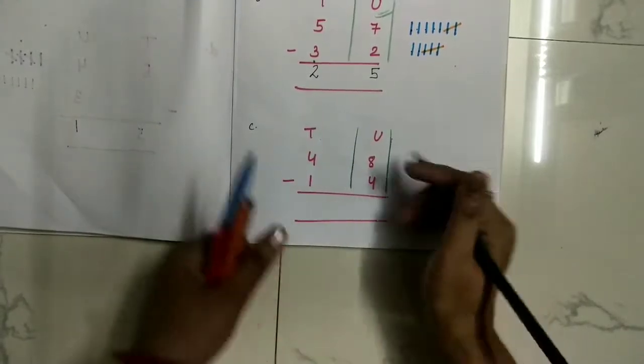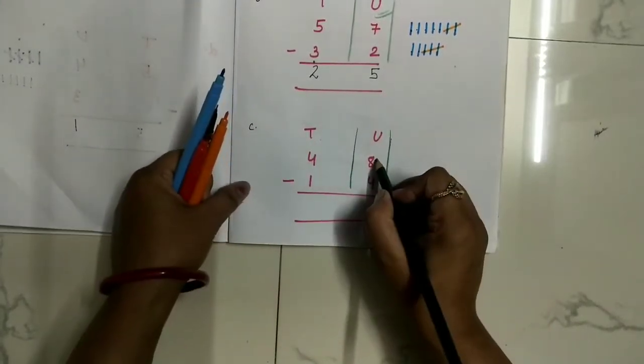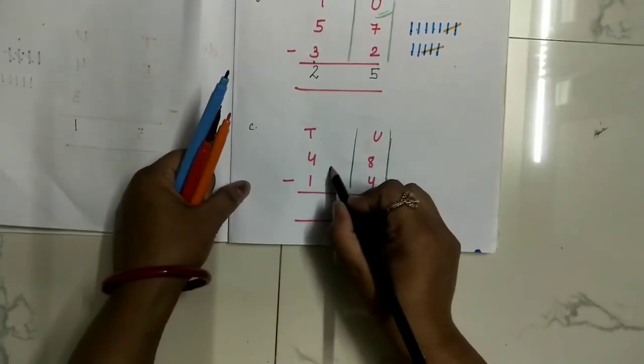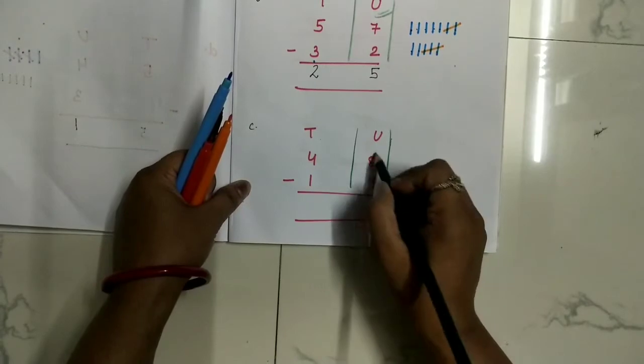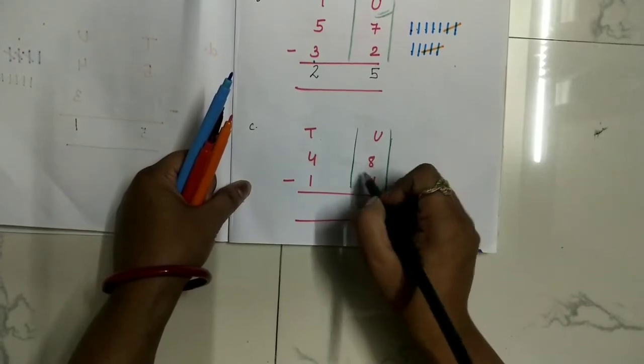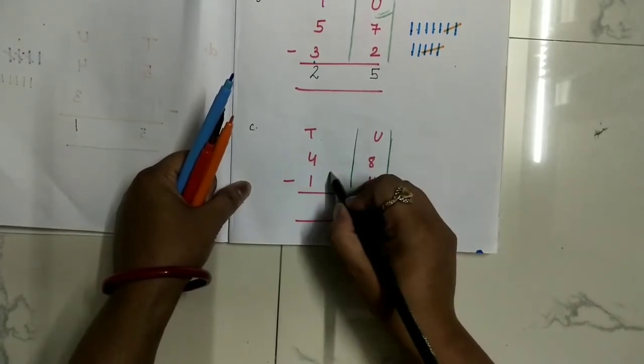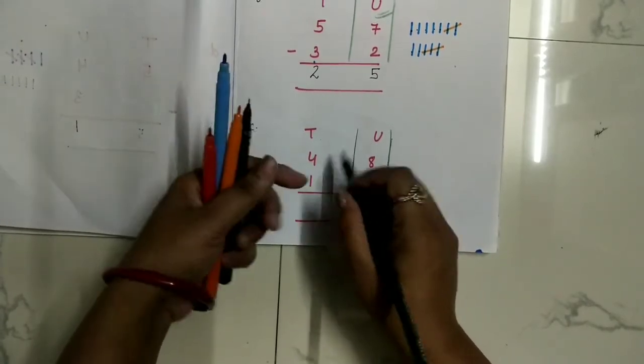We call this the unit column and this is the tens column. Firstly we subtract the unit column, then we subtract the tens column.